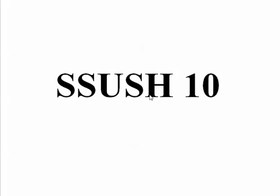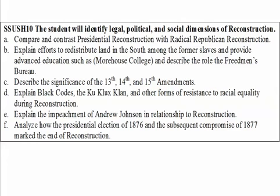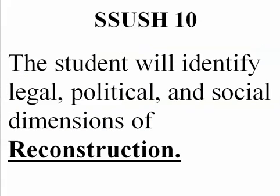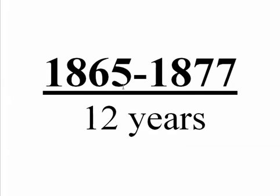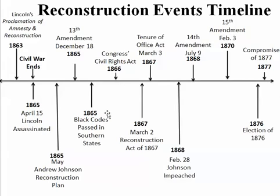Let's look at Standard 10 and the big overall picture. The student will identify legal, political, and social dimensions of Reconstruction. There are six substandards — A through F — under Reconstruction. Reconstruction lasted from 1865 at the end of the Civil War until 1877, the Compromise of 1877. We're going to talk about that before this Standard is over. For 12 years, Reconstruction was in place. I have a timeline of events here that we'll look at as we go through.